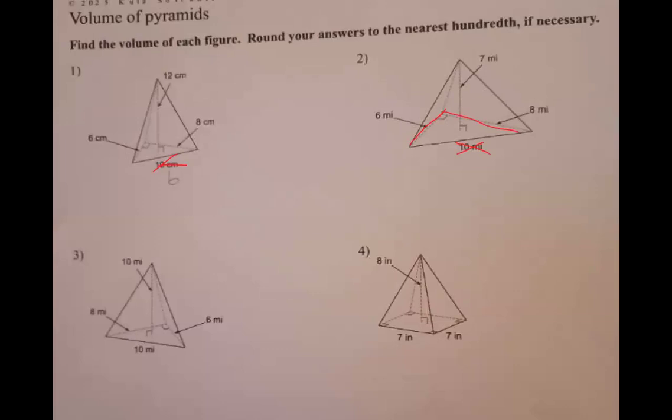When we get to number four, your base, your big B, it looks like a square. So seven times seven, so 49. And then so again, 49 times eight divided by three. Anytime it's pointy, you're going to divide by three.